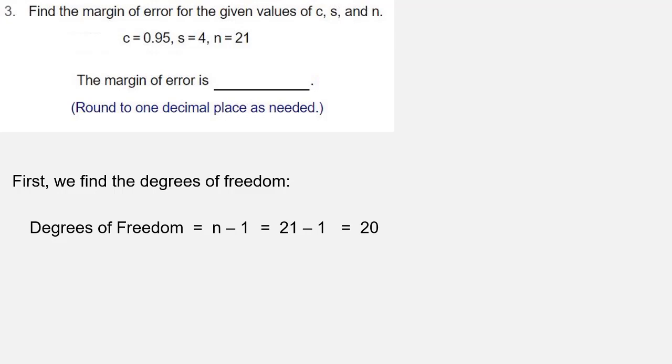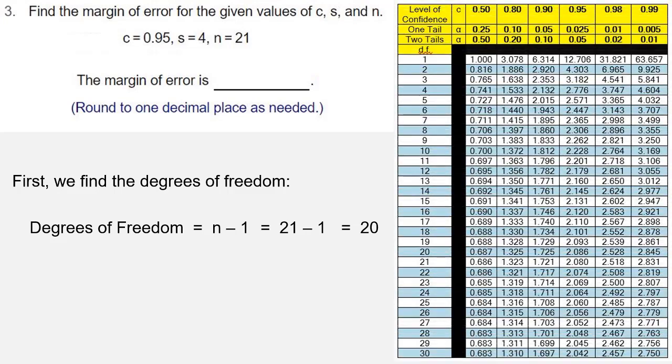Once we have our level of confidence C and our degrees of freedom 20, we can go to the T-distribution table. On the T-distribution table, we find the column for our level of confidence and the row for our degrees of freedom, and where those meet is our critical value Tc, in this case, 2.086.